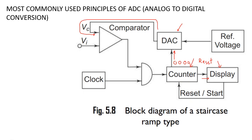We will see how the DAC works later, but what you need to understand is that for proper working of the DAC, you require a reference voltage. This reference voltage could be 5 volts or 12 volts — it depends on the range of your input voltage and how much resolution you want.